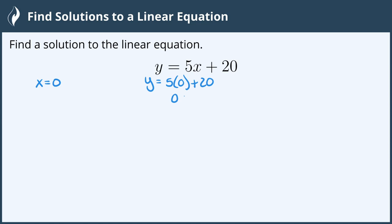5 times 0 is 0, 0 plus 20 is 20, so y equals 20 when x is 0. We can write this as the ordered pair (0, 20).